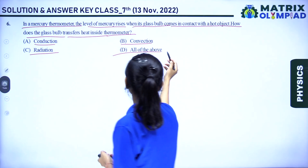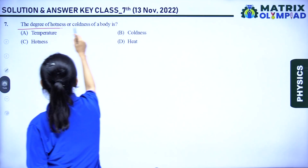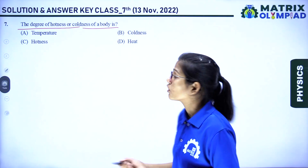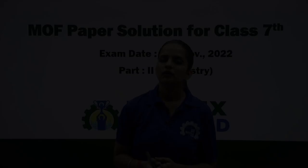Question number 7: the degree of hotness or coldness of a body is simply the temperature of that object. So the answer to question 7 is option A.